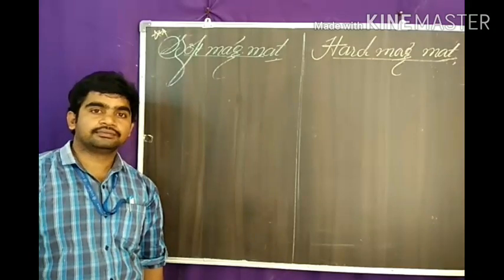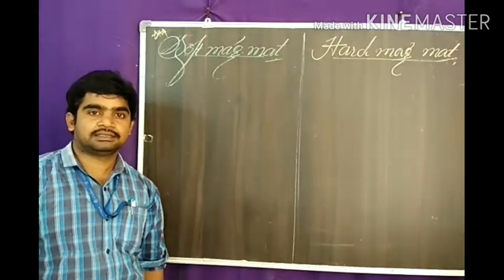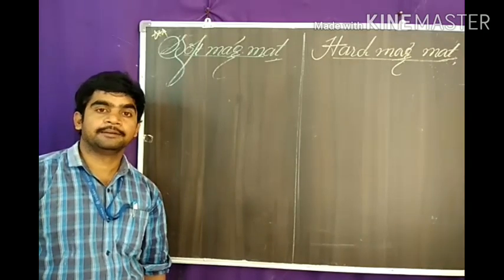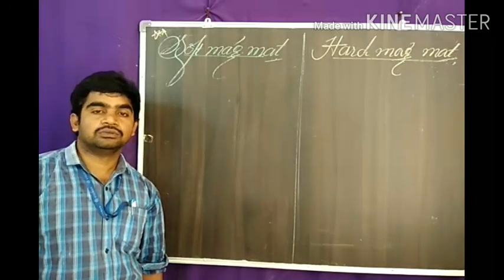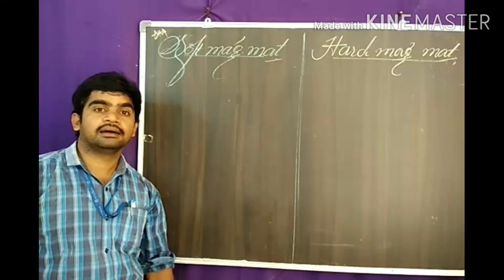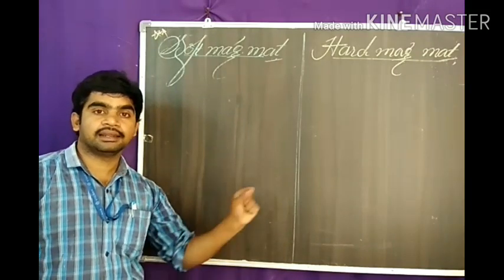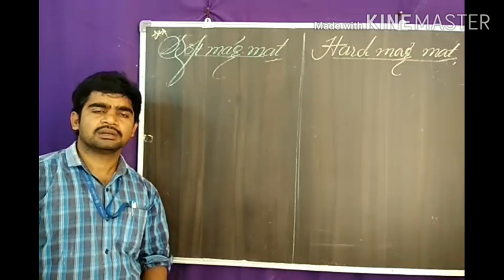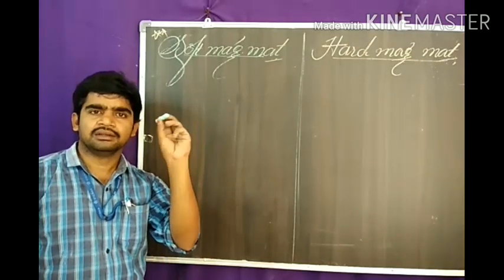On the basis of magnetization process, magnetic materials are classified into two categories: one is soft magnetic materials and another one is hard magnetic materials. Magnetization is when you place a magnetic material in a magnetic field.